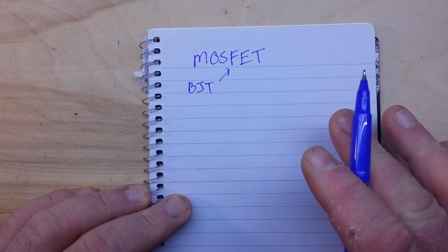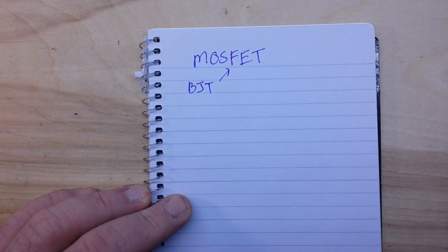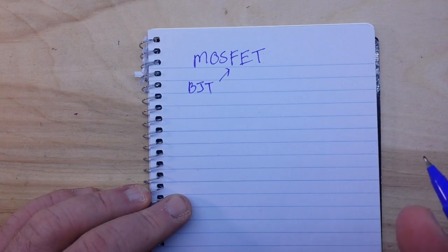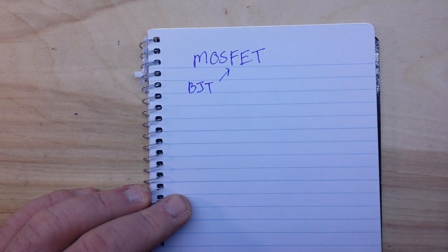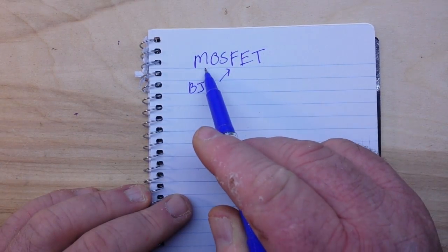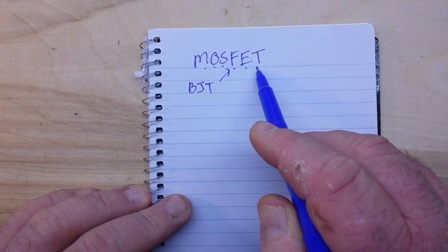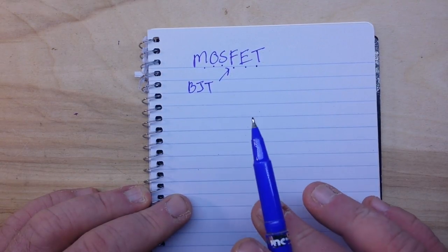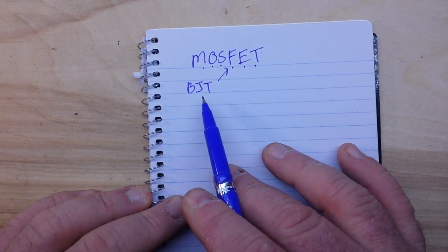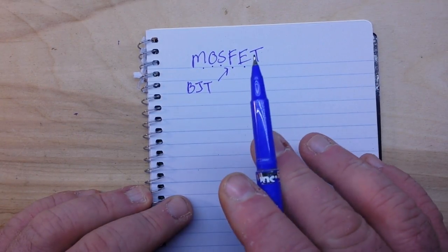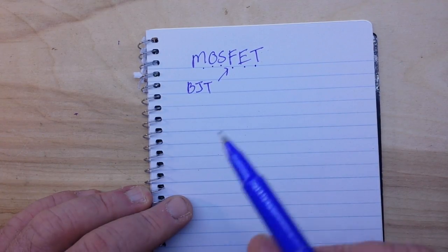The MOSFETs were actually envisioned by a guy named Lillian Feld about 1925, but they weren't patented until about 20 years later by Bell Labs. MOSFET stands for Metal Oxide Semiconductor Field Effect Transformer. Now it's got a lot of different properties from a BJT, but it behaves in pretty much the same fashion. It can be a switch or it can be an amplifier.